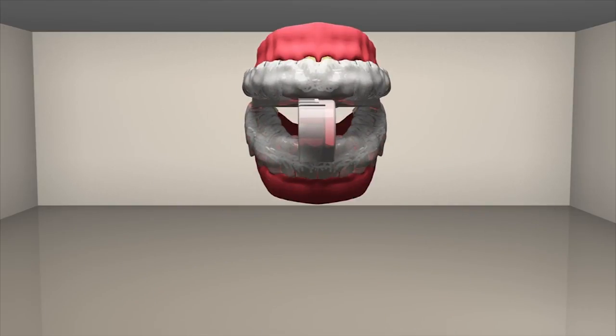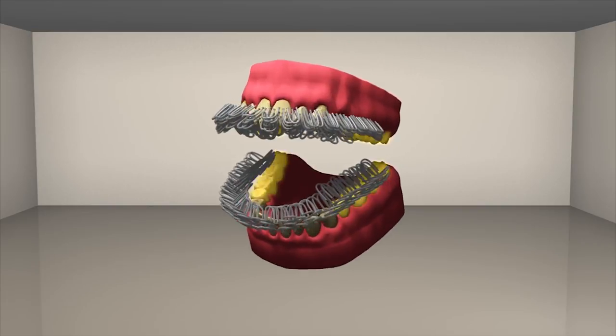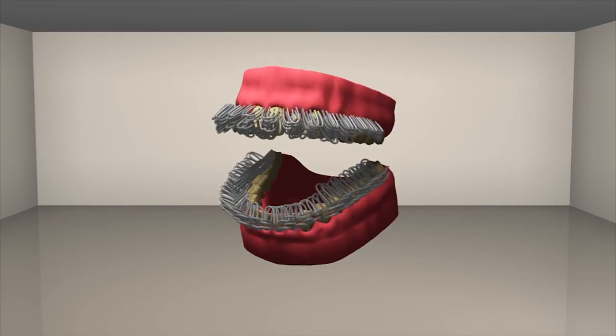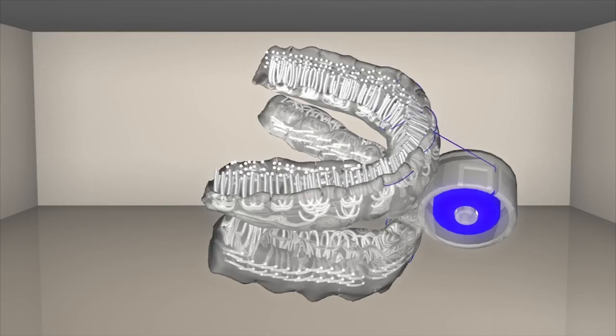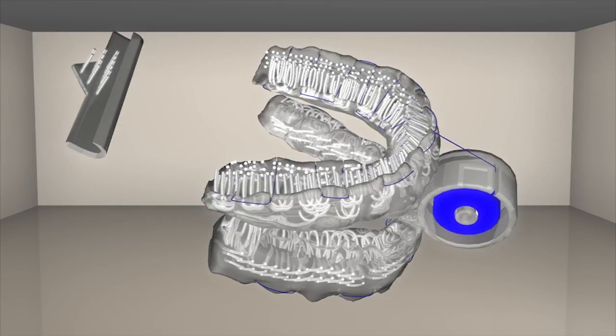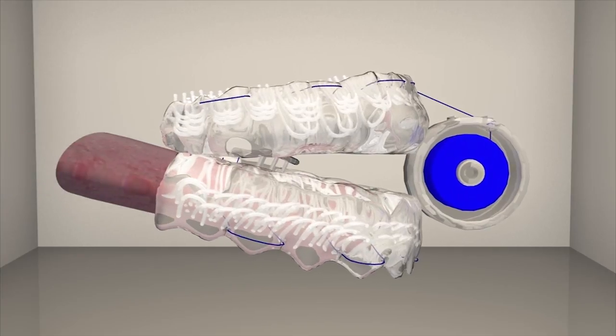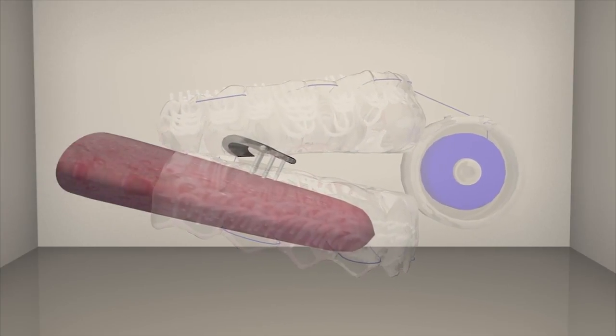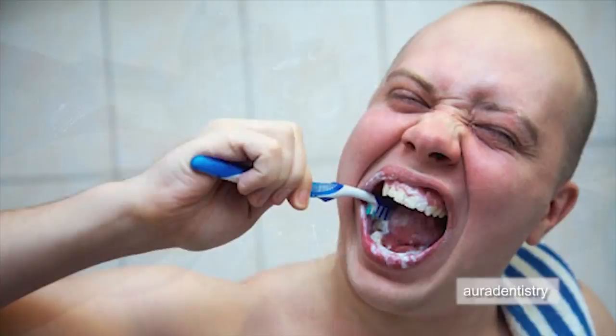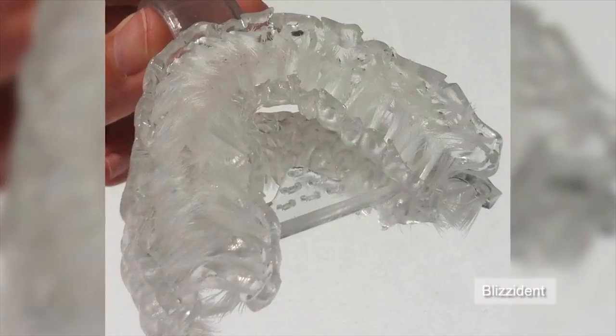Instead of brushing, users bite and grind their teeth on the brush. This action enables the bristles to get to difficult-to-reach regions. The handle doubles as a floss dispenser. The device also has a built-in tongue scraper. Blizzident claims its device can clean the teeth in places handheld toothbrushes can't reach. The Blizzident costs $299 and must be replaced once a year.